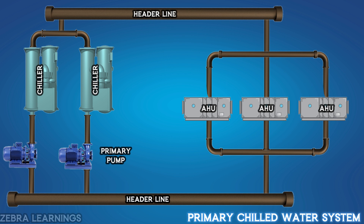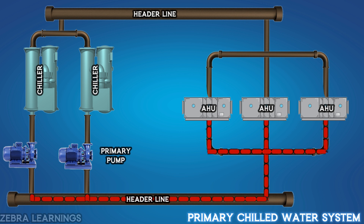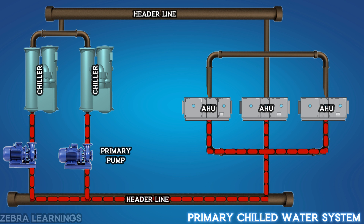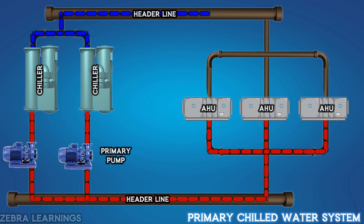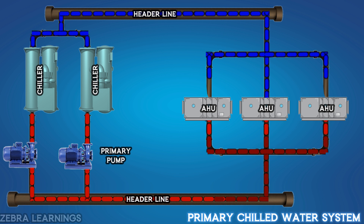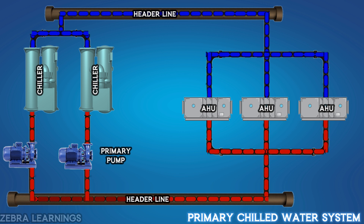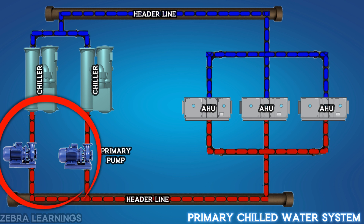Let's discuss the primary chilled water system. The return water from the AHU goes to the return water header line. The primary pump then sucks the water from the header line and sends it to the chiller. The chilled water from the chiller then goes to the supply water header line, and from there it goes to the AHU in the building. The water then returns from the AHU to the chiller via the primary pump. This process continues continuously, and the primary pump is the only pump that does this entire process.